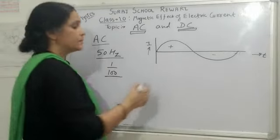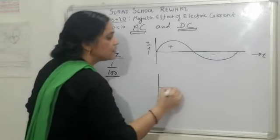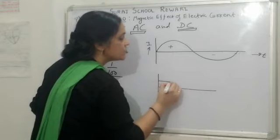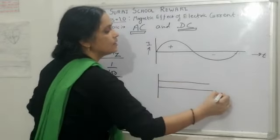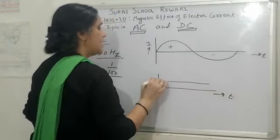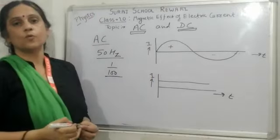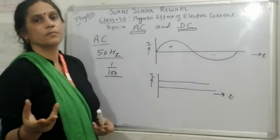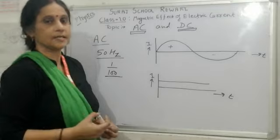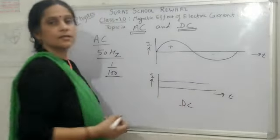Direct current. Direct current is the current which does not change its direction with time. Either clockwise or anticlockwise, it remains the same. Does not change its direction with time. That is DC current, direct current.